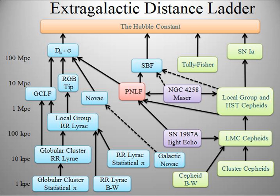The extragalactic distance scale is a series of techniques used today by astronomers to determine the distance of cosmological bodies beyond our own galaxy, which are not easily obtained with traditional methods. Some procedures utilize properties of these objects, such as stars, globular clusters, nebulae, and galaxies as a whole. Other methods are based more on the statistics and probabilities of things such as entire galaxy clusters.